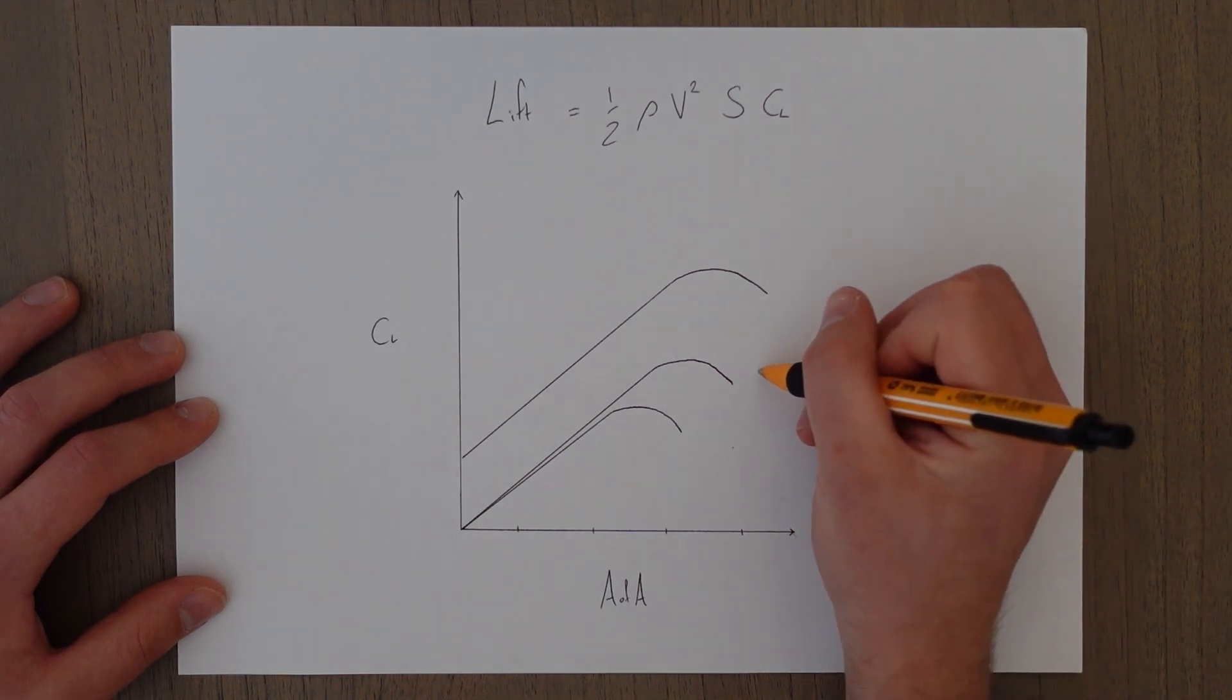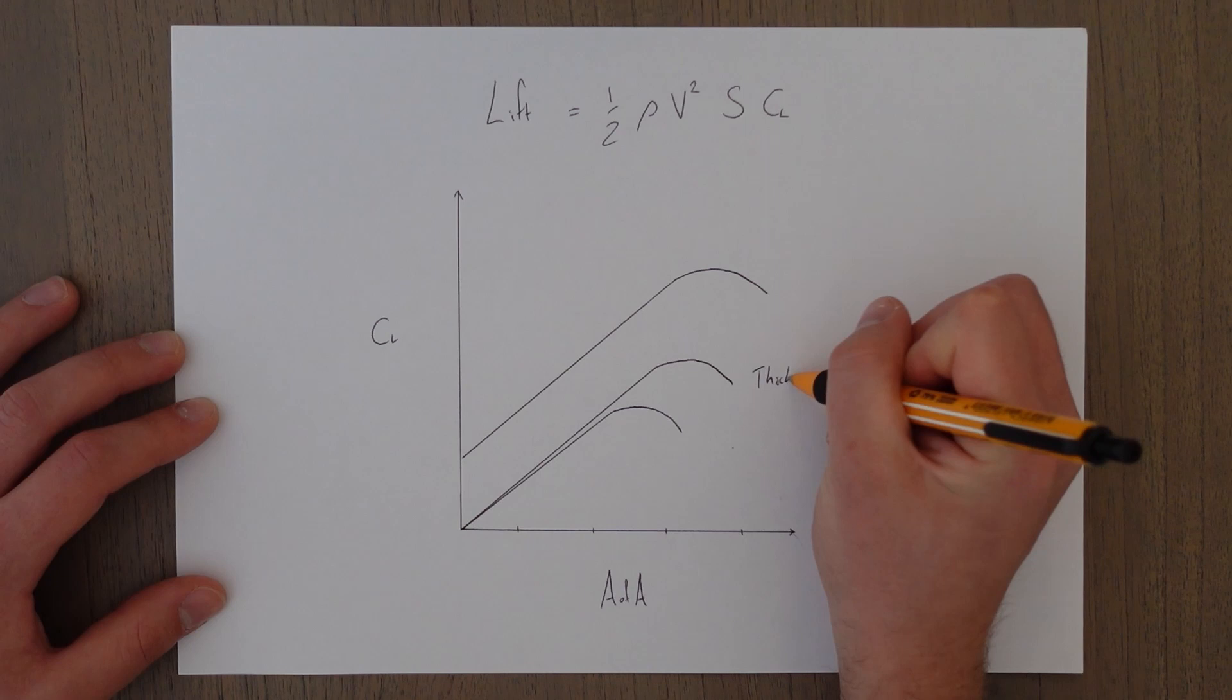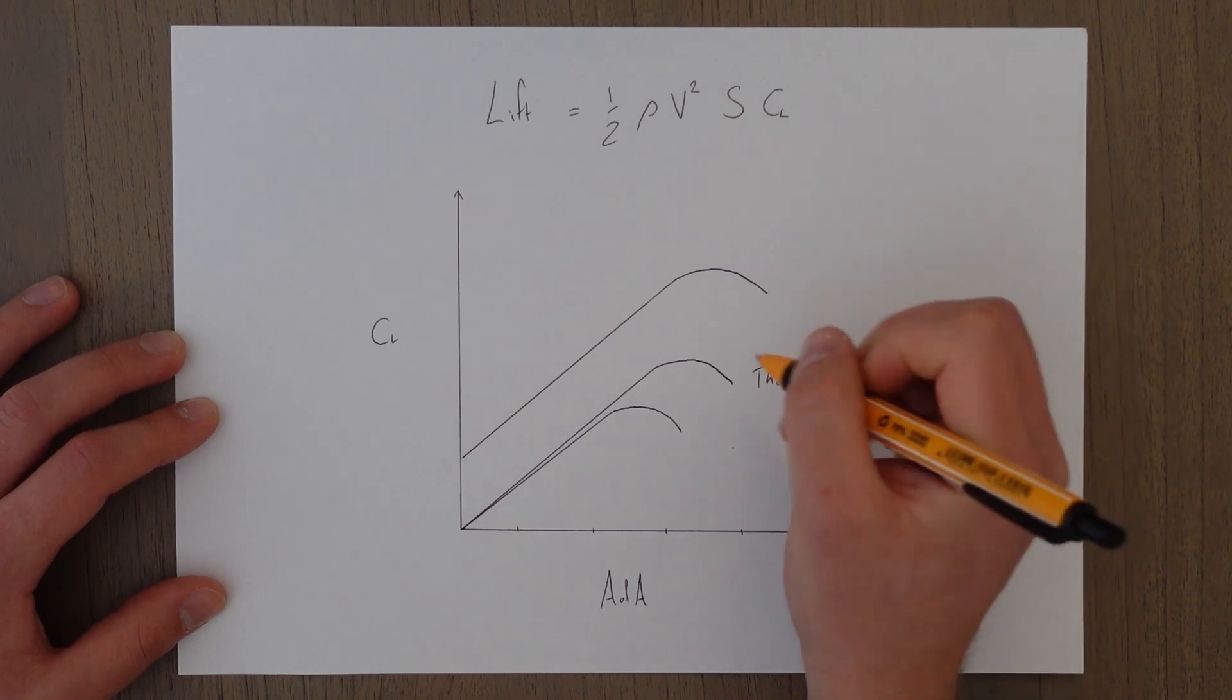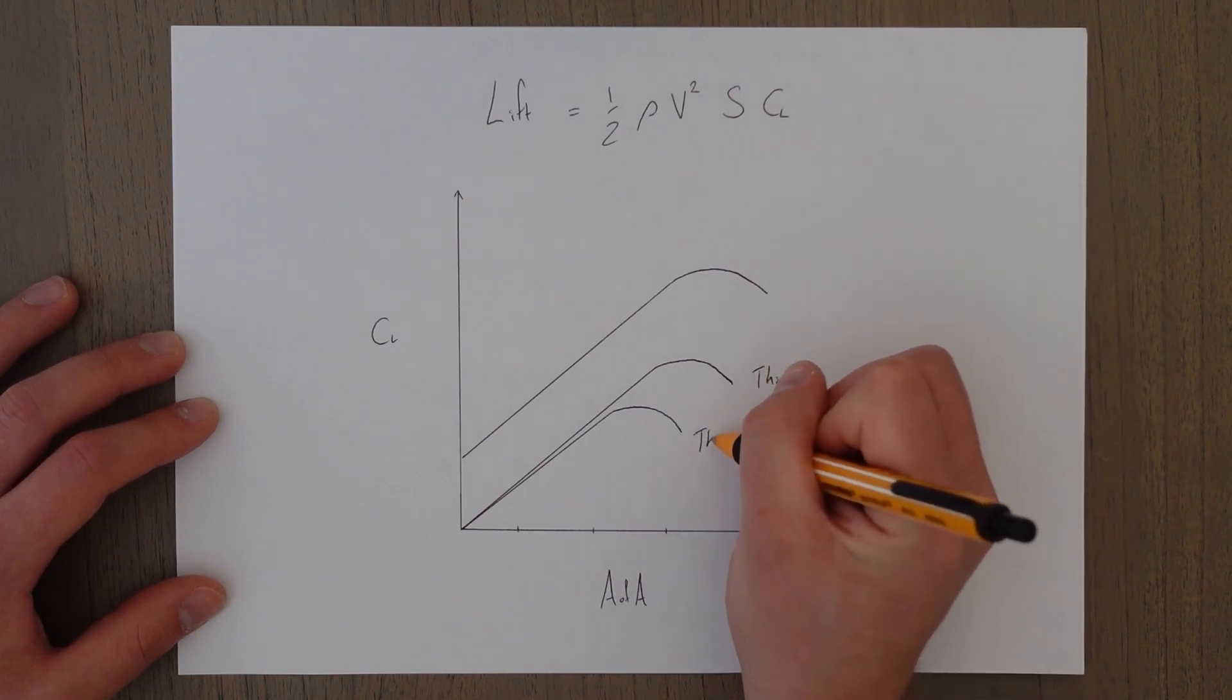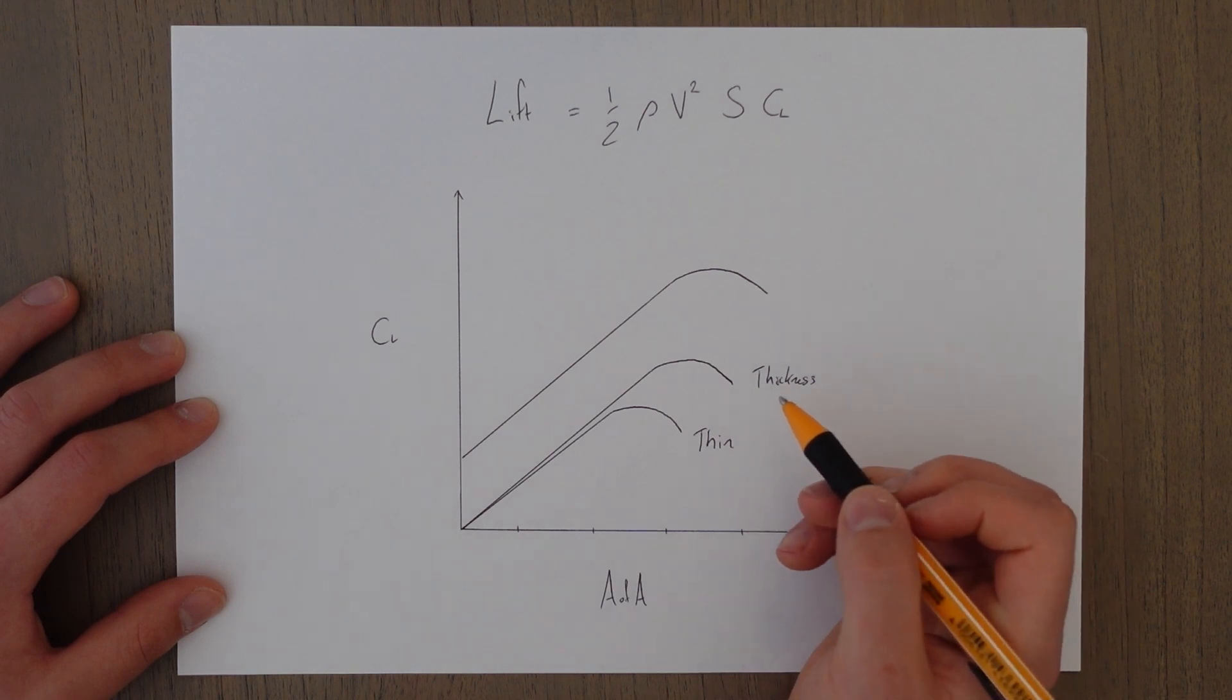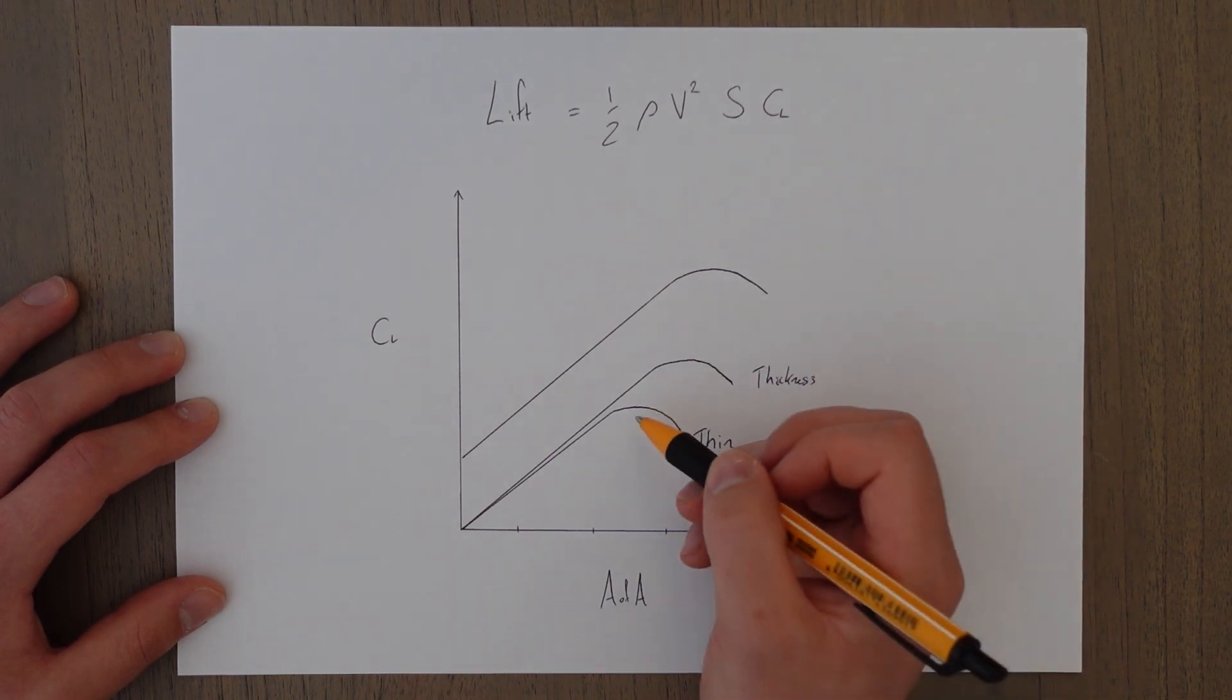As we increase the thickness, we increase our CL max, and if we reduce the thickness, make it more thin, our CL max reduces.